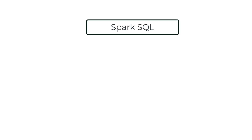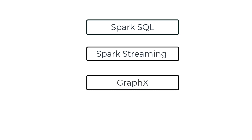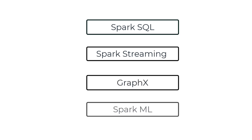Another interesting fact about Apache Spark is that it is modular. If you want to do SQL-style processing, there is the Spark SQL module. For analyzing real-time data, there is a built-in module called Spark Streaming. For graph-style processing, there is a module called GraphX. There is even a module called Spark ML which allows you to run machine learning and AI at scale. Spark also supports many programming languages including Python, Scala, Java, R, and SQL.